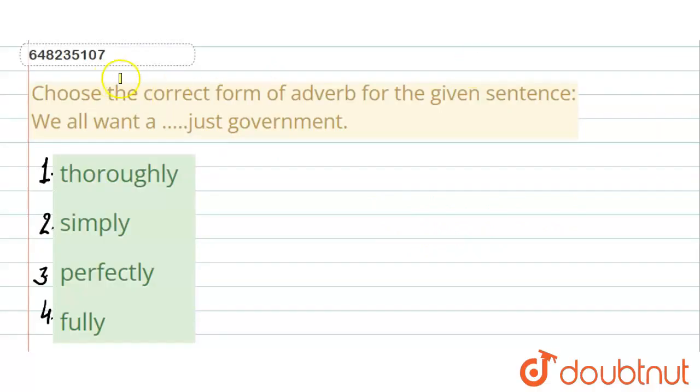Hello everyone, this is our question. Choose the correct form of adverb for the given sentence. The sentence is, we all want a dash just government. Here we have 4 options.